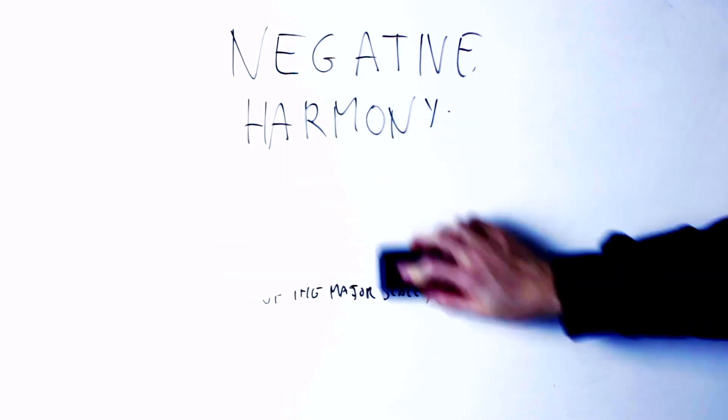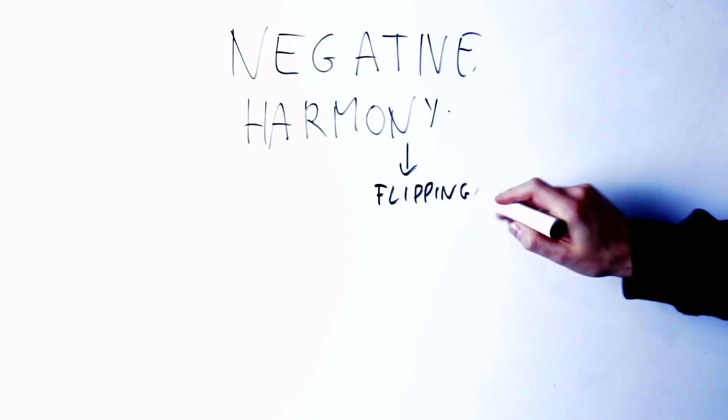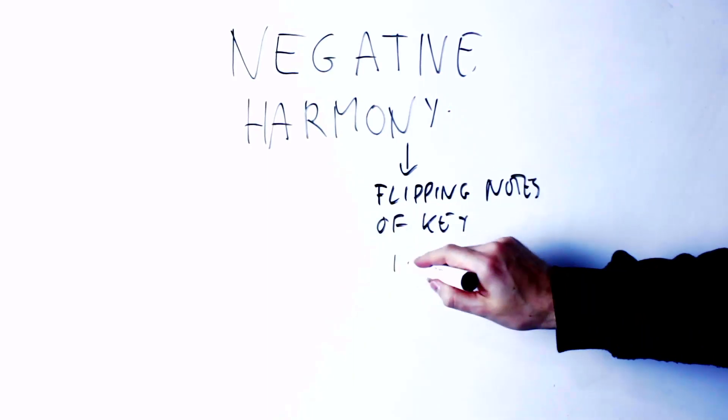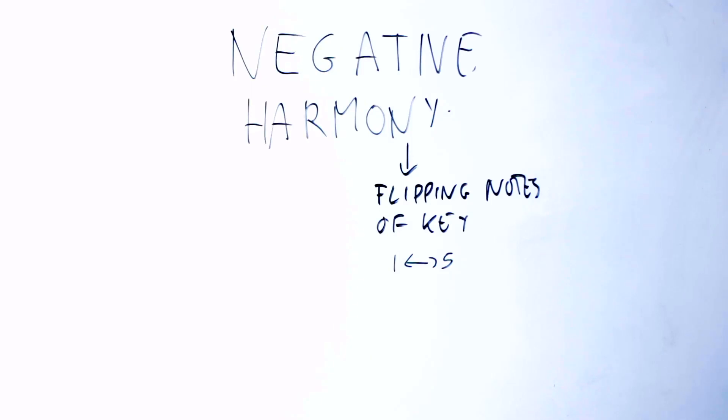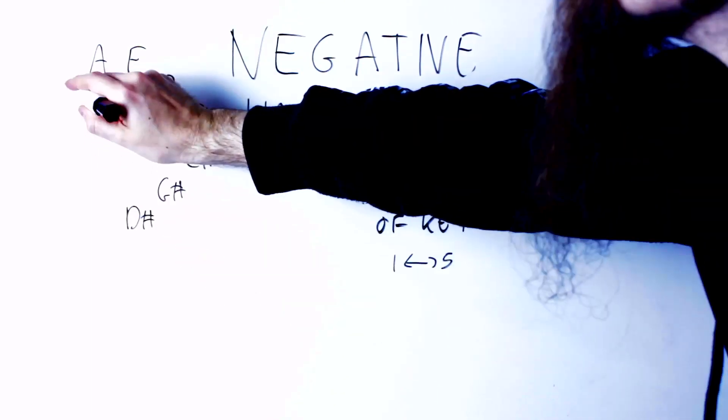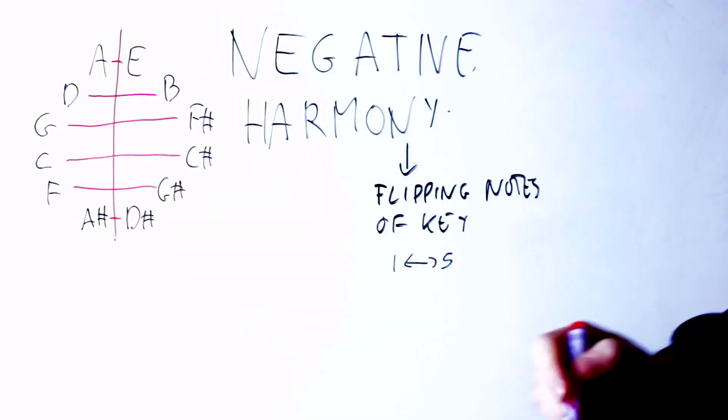Here, I'm just going to say again that negative harmony essentially involves flipping the notes of the key around so that the first note of the key becomes the fifth note of the key and vice versa, and all the other notes change accordingly. Here you see how the notes flip around in the key of A.